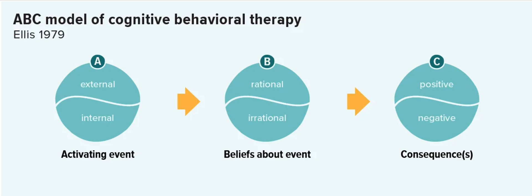There are three steps — you can see them on screen. You have: the activating event, then your beliefs about the event, and then the consequences.